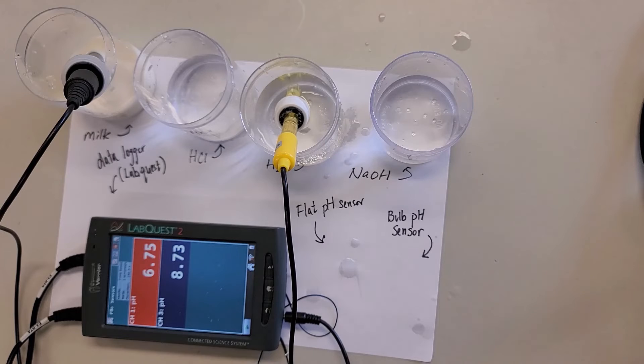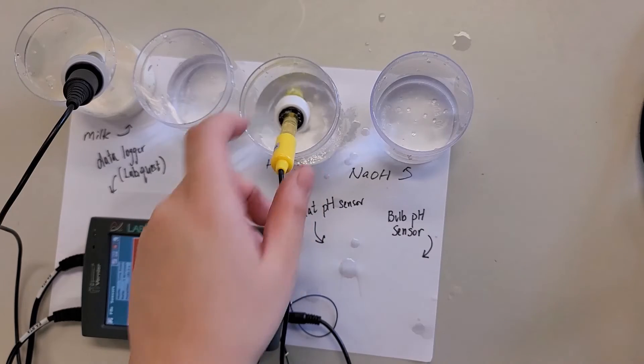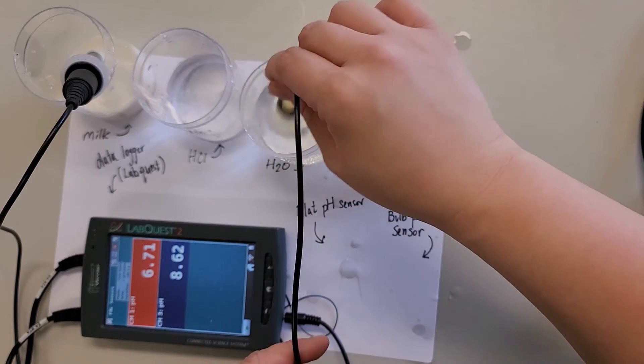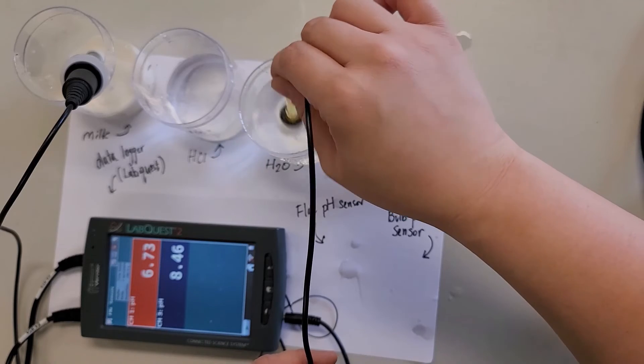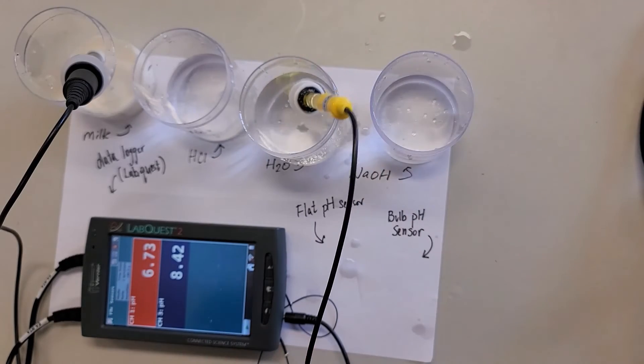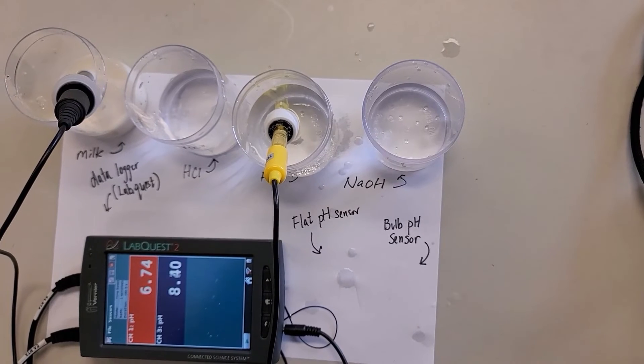All right, so now you can see that the bulb pH sensor is detecting water. I need to allow some time for it to settle down for a bit. You can see that it's actually dropping.